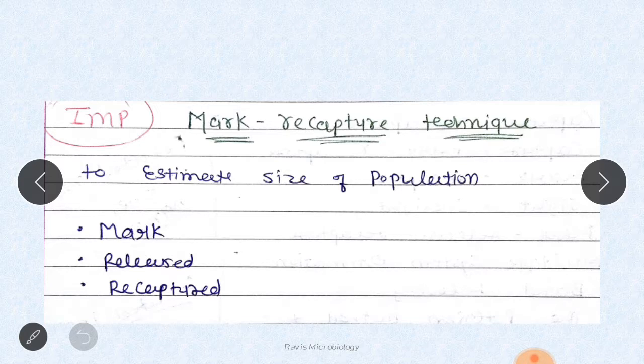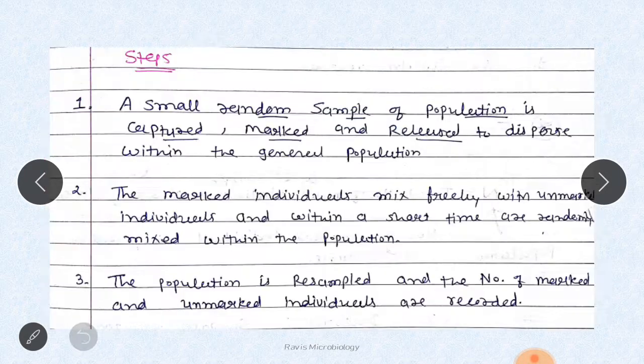What are the steps? We capture the animal, mark them, release them into their population, recapture and calculate the outcome. A small random sample of a population is captured, marked, and released to disperse within their general population. The marked individuals mix freely with unmarked individuals and within a short time are randomly mixed. The population is resampled and the number of marked and unmarked individuals are recorded.